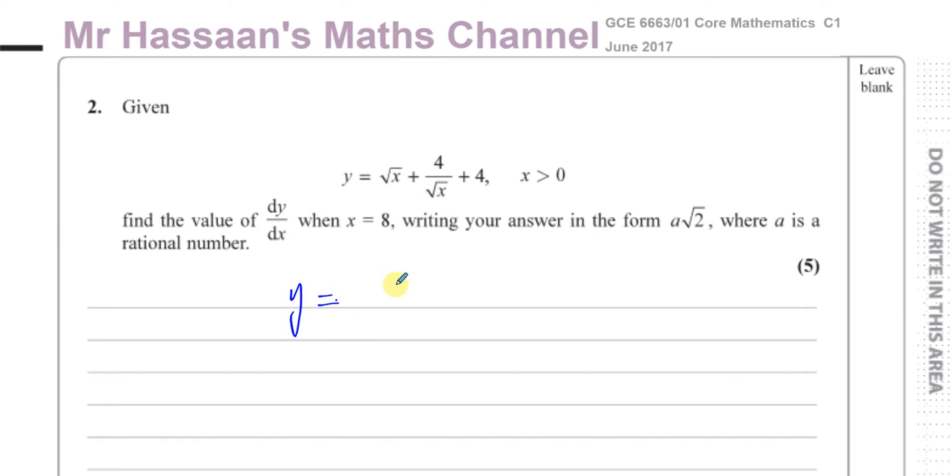So you have y equals, now the square root of x is the same as x to the power of a half. And you've got plus 4, this is going to be 4 over x to the power of a half, which we want to write with terms in the numerator. So it will be 4 times x to the power of negative a half. Because this is x to the power of a half, you want to write it in the numerator, it will be x to the power of negative a half, it's reciprocal, plus 4.